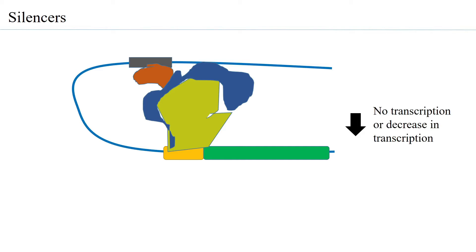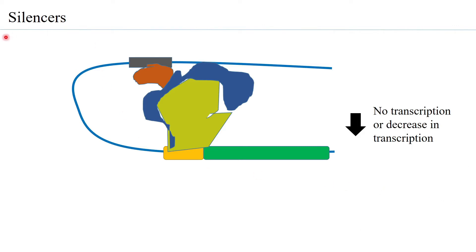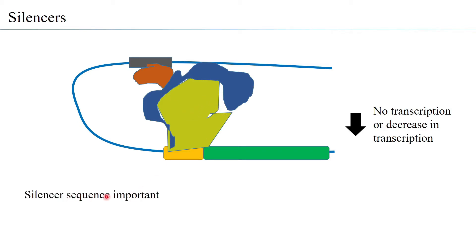Just like enhancers, silencers are able to work from a distal area, and what you see is DNA looping. For its functioning, the co-repressor or repressor must bind to the transcription machinery — either directly mediating repression or doing so through another repressor molecule. The silencer sequence itself is important.